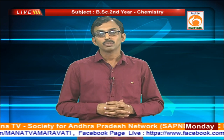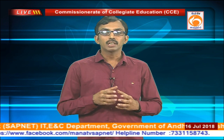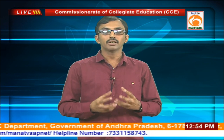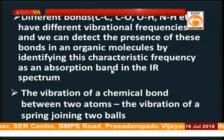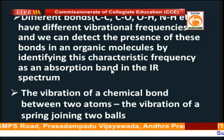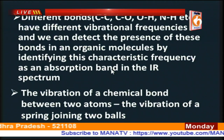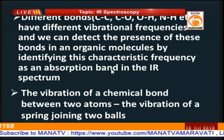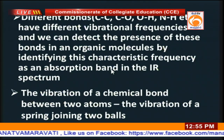The basic principle of IR spectroscopy is that each and every chemical bond has an intrinsic vibration frequency, and no two different chemical bonds have identical intrinsic vibration frequency values. Therefore we can detect bonds in organic molecules by identifying these intrinsic frequency values as absorption bands in the IR spectrum. The chemical bond is like a spring between two balls, so it has flexibility and will undergo vibration — the vibration may be simple harmonic or anharmonic.